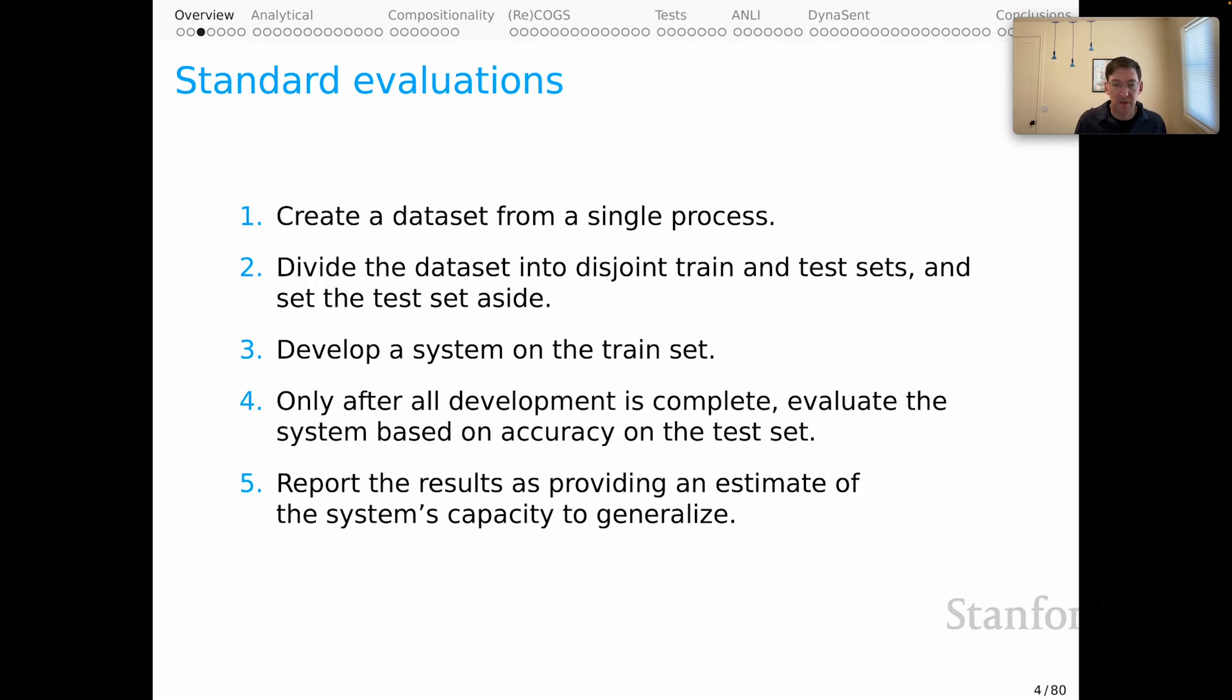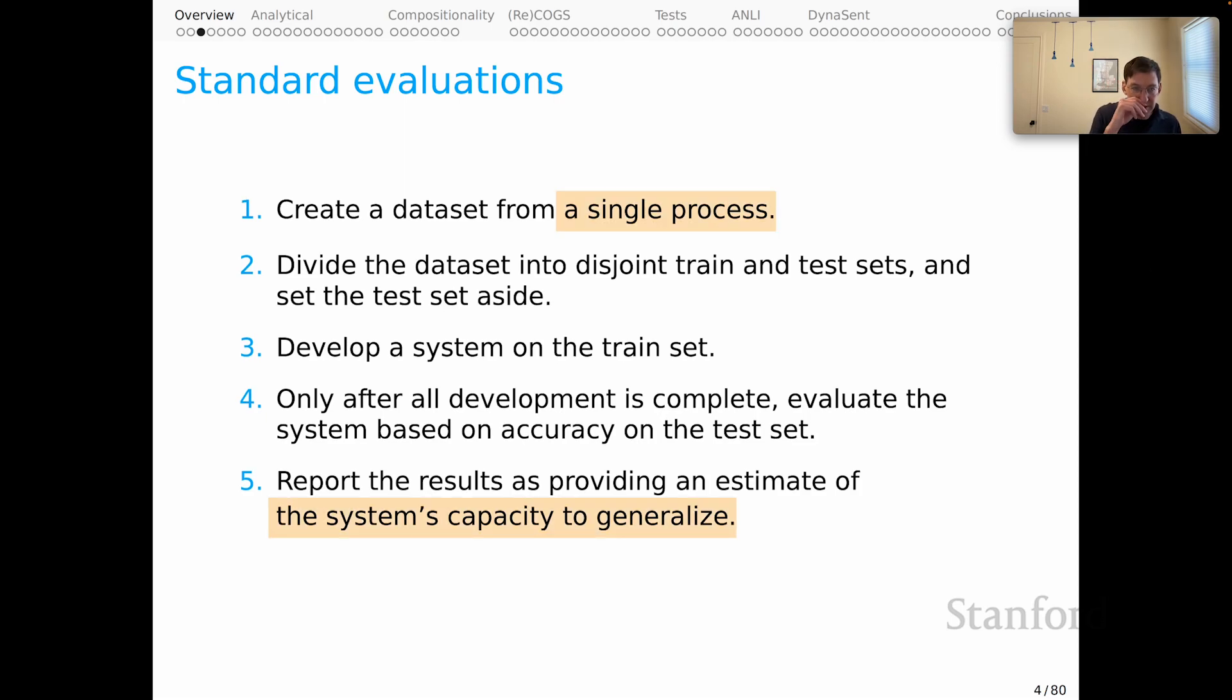And then this is crucial. You do report the results as an estimate of the system's capacity to generalize. And at that point, you're communicating with the wider world and saying you have a measure of the system's accuracy and you know people will infer that that means that's the accuracy that they will experience if they use the model in free usage. This is the part that worries me. Step one was a single process for creating the data and we report that as an estimate of the system's capacity to generalize. Even though we know full well that the world is not a single homogeneous process, we absolutely know that once the model is deployed, it will encounter examples that are very different from those that were created at step one. And that is the worrisome part.